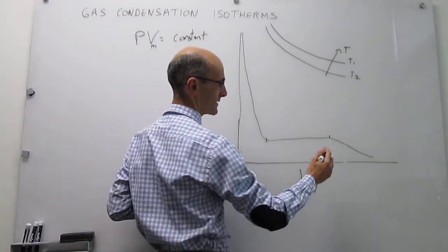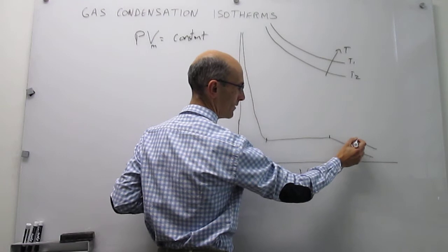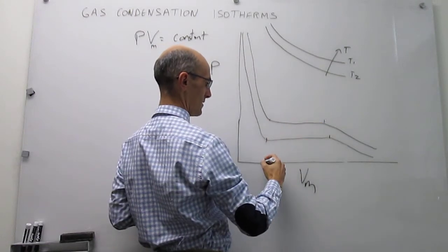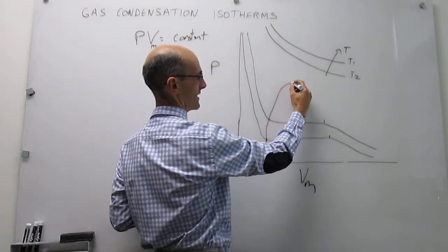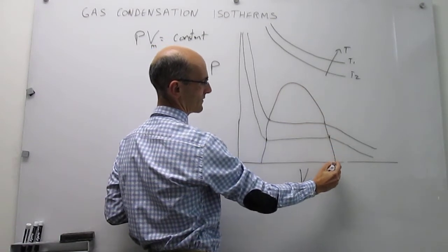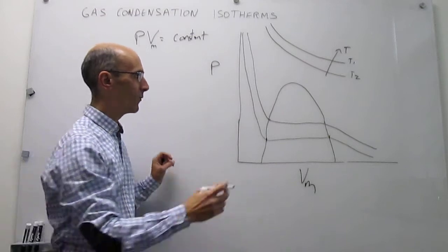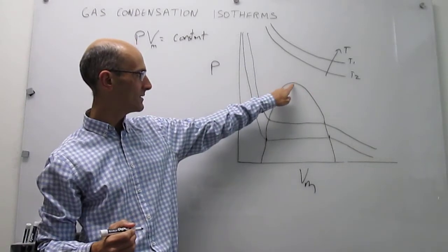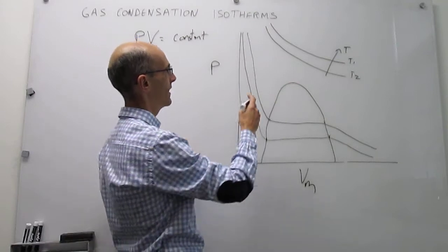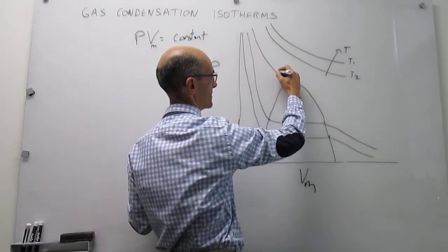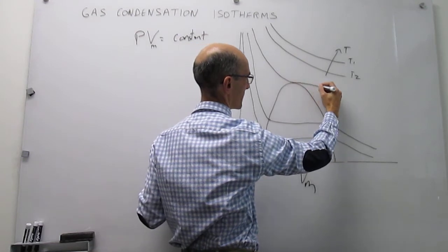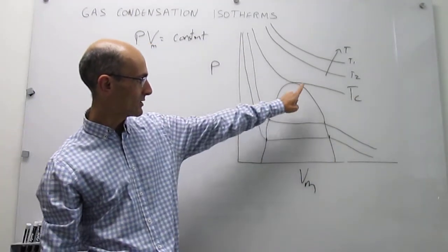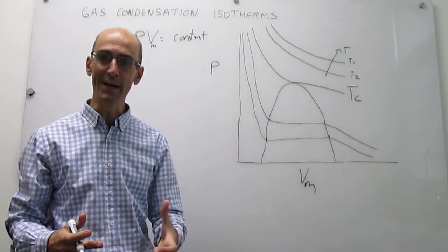Drawing a few more of these lines of zero slope and turnovers defines a region where condensation takes place. We draw an important boundary: the critical isotherm T_c, which corresponds to the apex of that condensation region. This is what we call the critical isotherm, and we will define exactly what the critical point means.